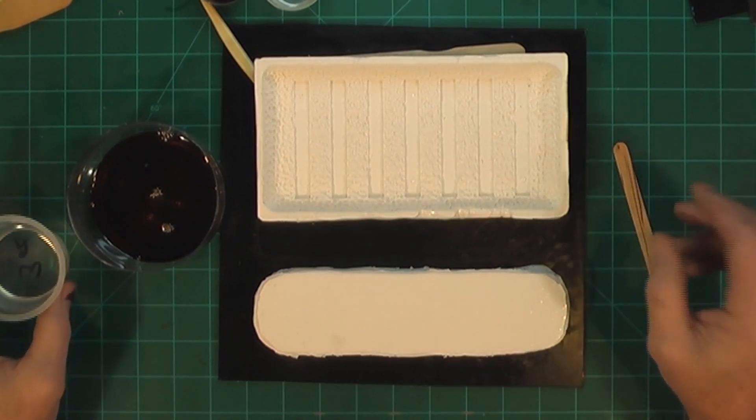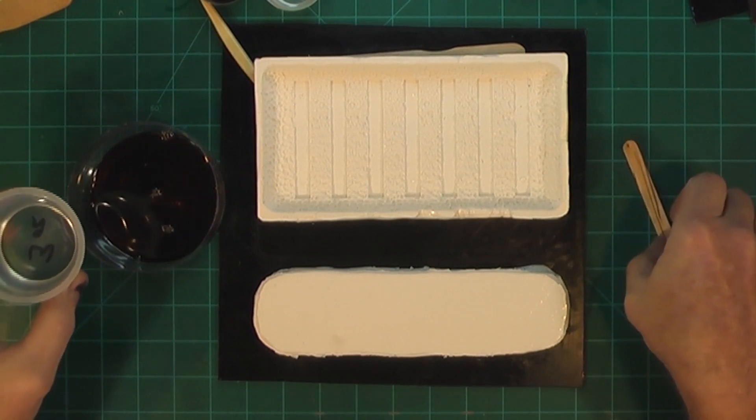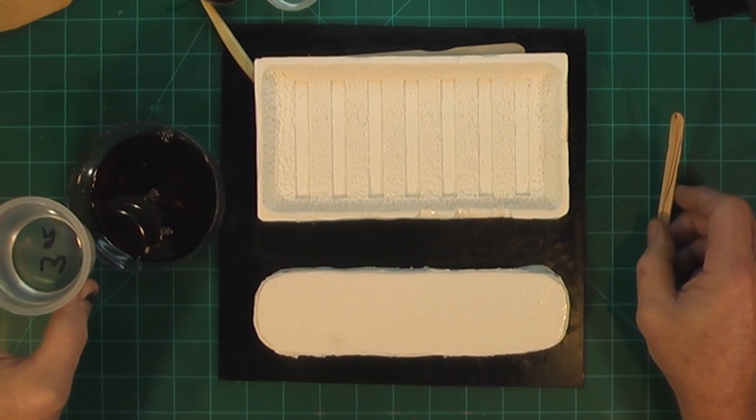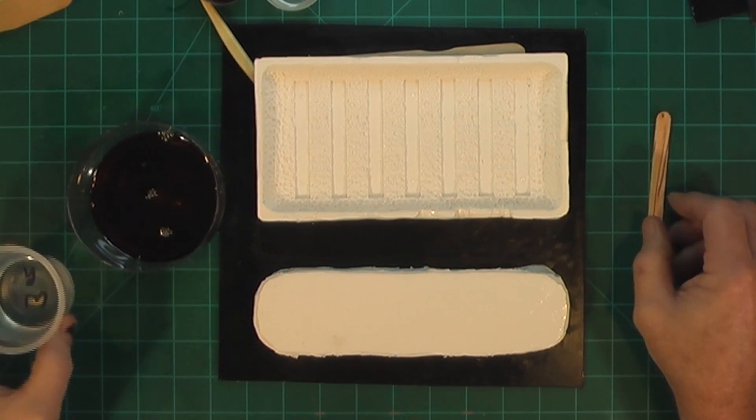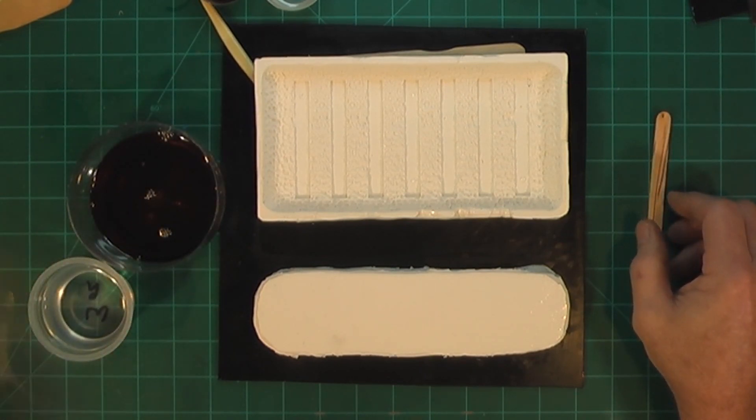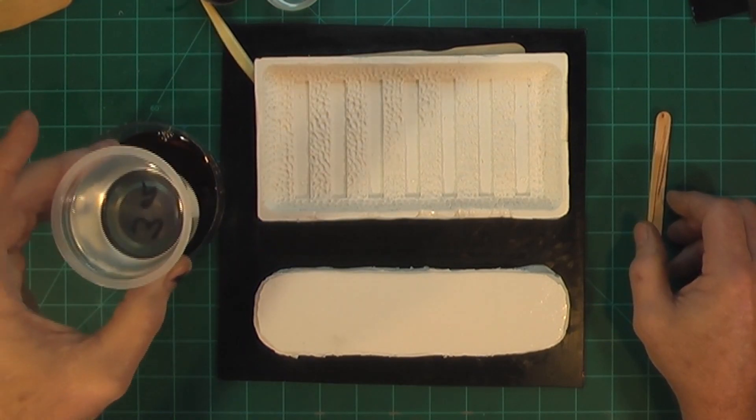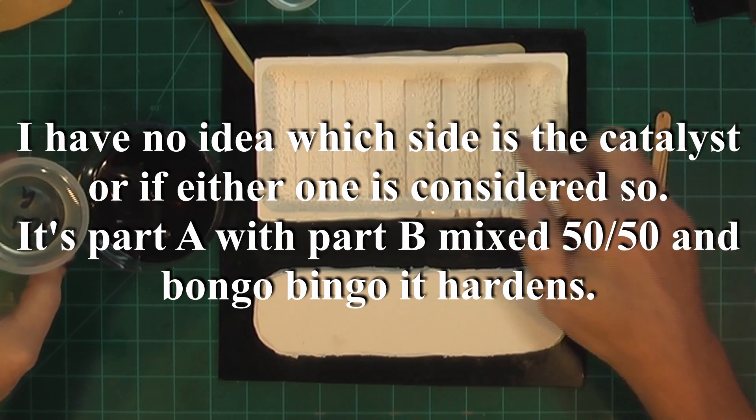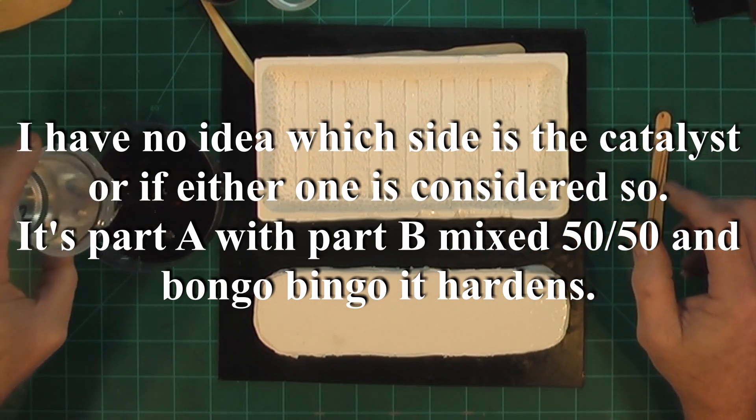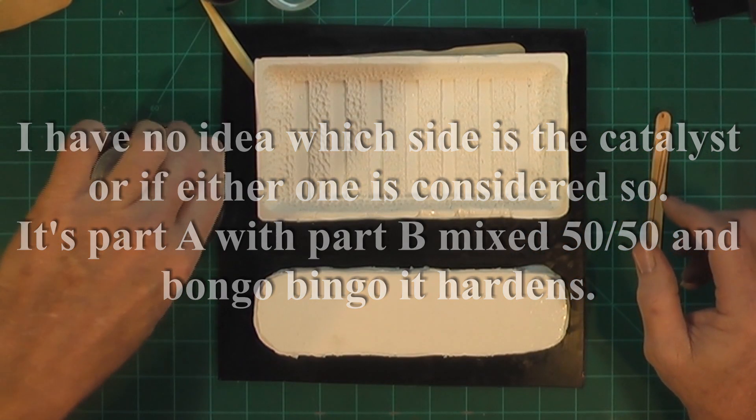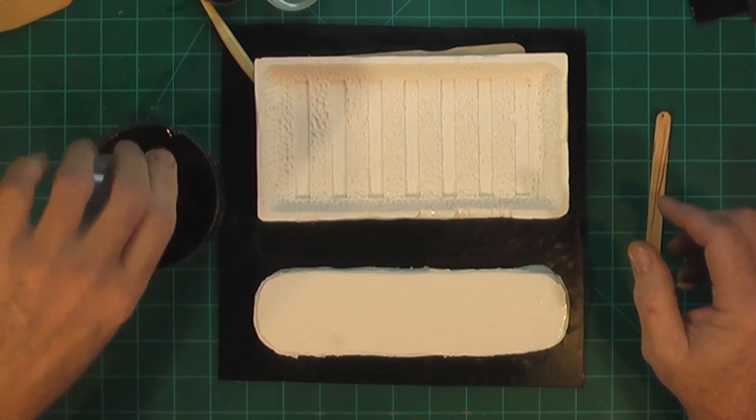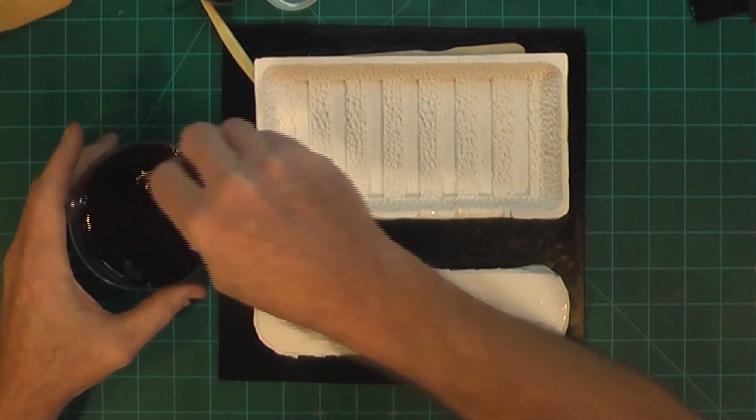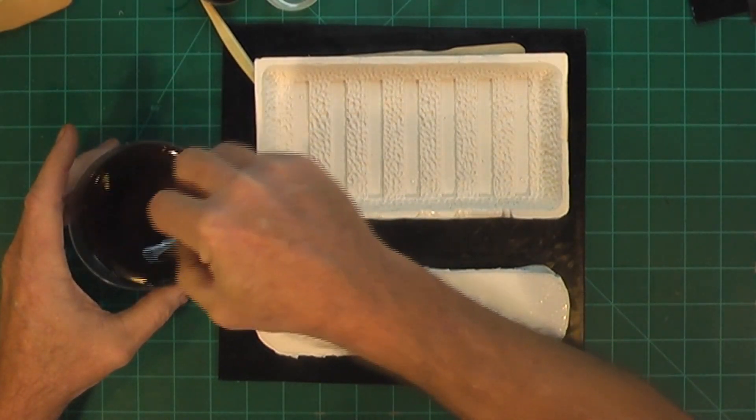Alright, I'm gonna pour. This is the Part B. I'm gonna start. That is Part B. Actually this is Part A. This is the catalyst. I'm gonna pour this in there, get it mixed up and pour it in the mold. And start mixing it and it'll start changing color.